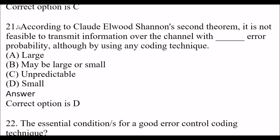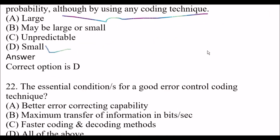Next question: According to Claude Elwood Shannon's second theorem, it is not feasible to transmit information over a channel with what kind of error probability, even by using any coding techniques? Option A: large. Option B: may be large or small. Option C: unpredictable. Option D: small. The right answer is option D, small. It is not feasible to transmit information with a small error probability although by using any coding techniques.